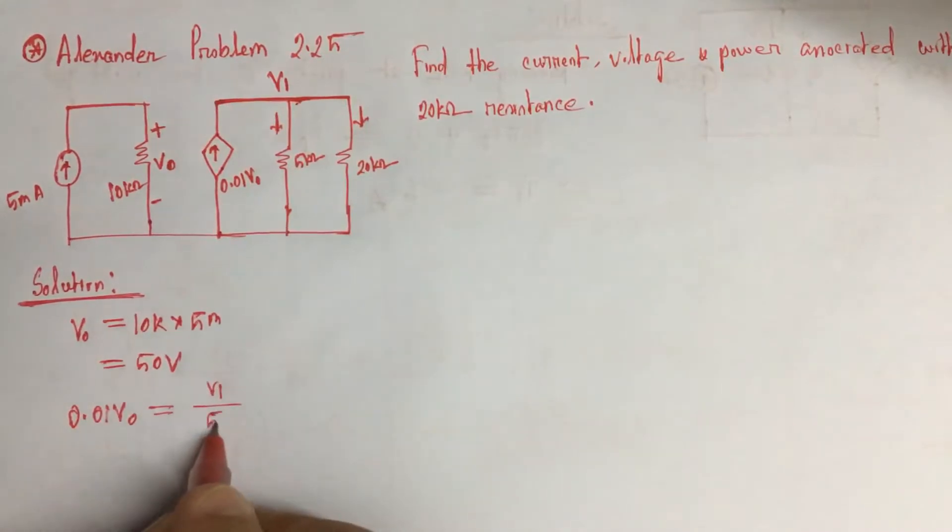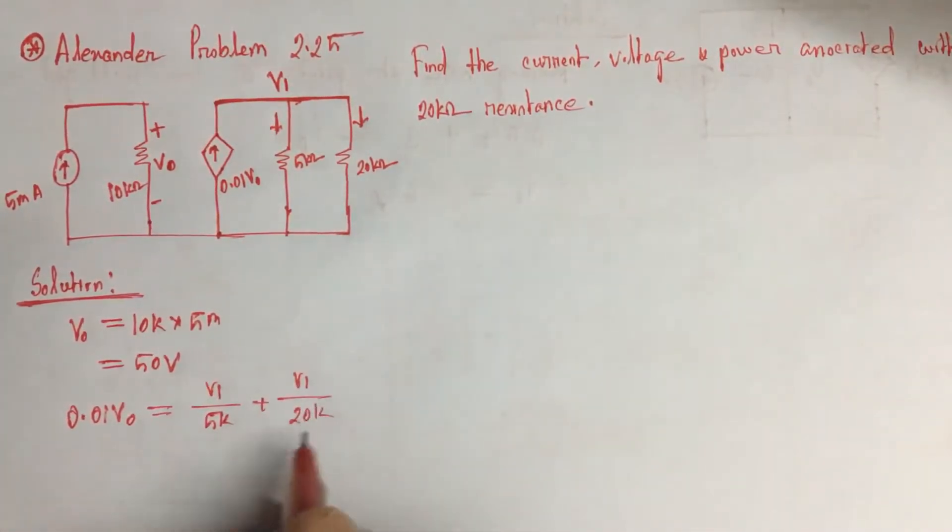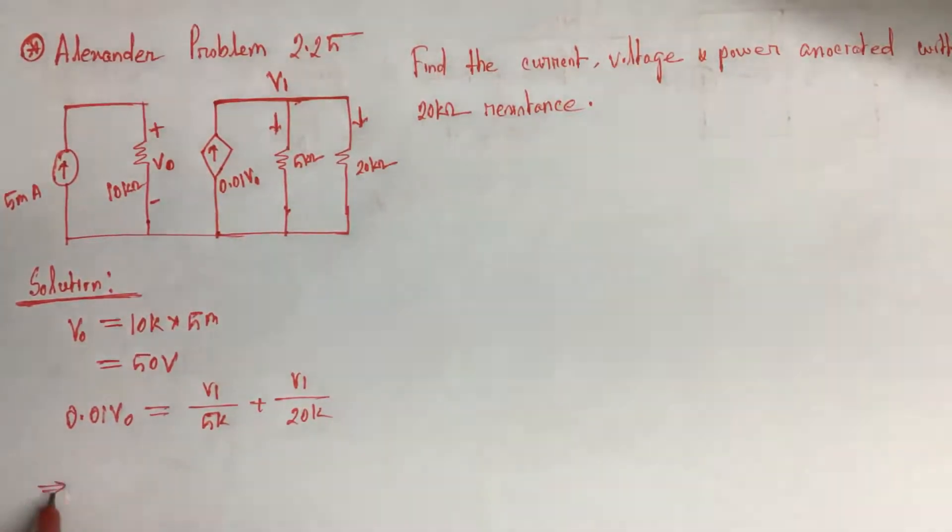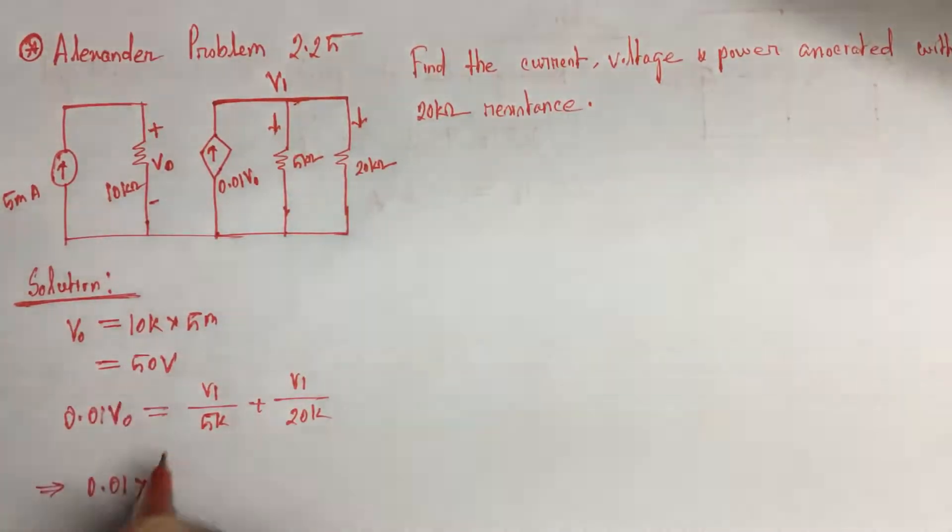Solving the equation, we will have 0.01 times V0. V0 can be brought from here; V0 is equal to 50 volts.